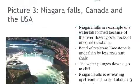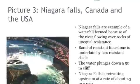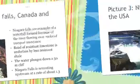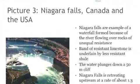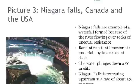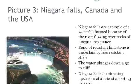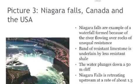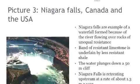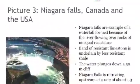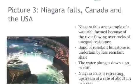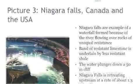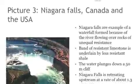Picture 3 shows Niagara Falls, Canada and the USA. Niagara Falls is an example of a waterfall formed because of the river flowing over rocks of unequal resistance. A band of resistant limestone is underlain by less resistant shale. The water plunges down a 50-meter cliff. Niagara Falls is retreating upstream at a rate of about 1.3 meters a year.